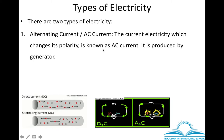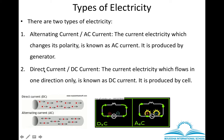The definition of alternating current is: the current electricity which changes its polarity is known as AC current, and it is produced by a generator. The next current is direct current or DC current. This current is produced by a cell or battery. In a battery, the polarity is always fixed — one side is always the negative terminal and the other is positive. So the flow of current produced by a battery is always in one direction, and such current is called direct current.